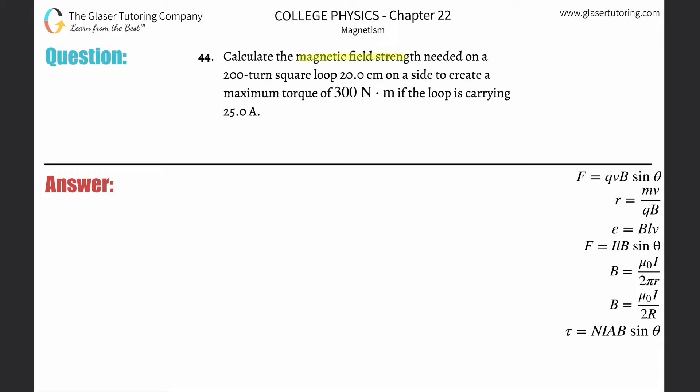Number 44: Calculate the magnetic field strength needed on a 200-turn square loop, 20 centimeters on a side, to create a maximum torque of 300 Newton meters if the loop is carrying 25 amps of current.